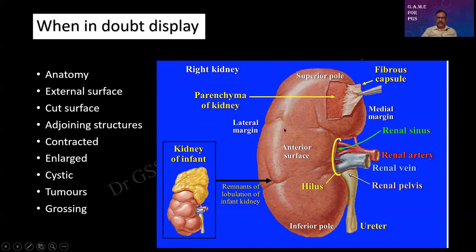So there is a renal parenchyma, there is the hilum over here. What are the structures coming out of the hilum? Is there any mnemonic for it? And how do you distinguish between the right adrenal and the left? These are the things.